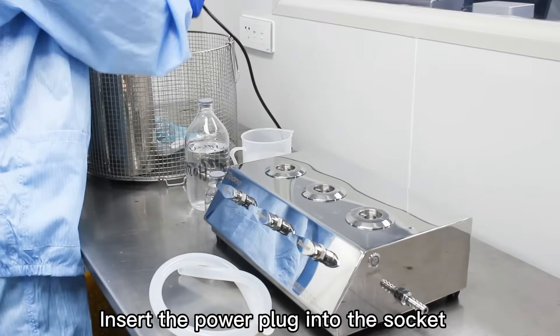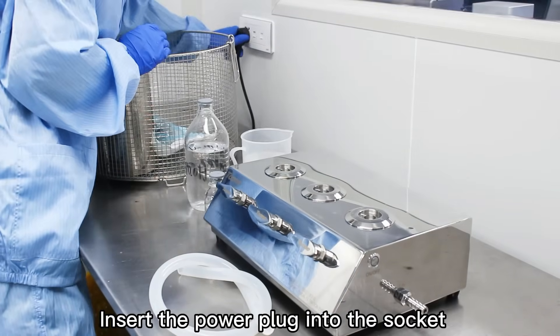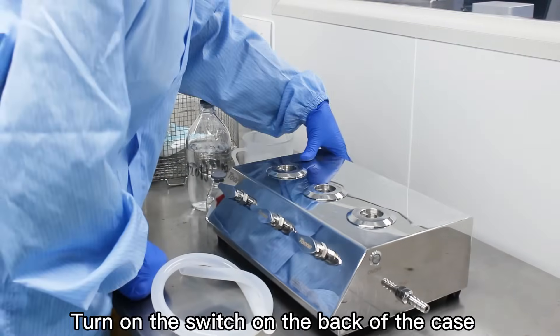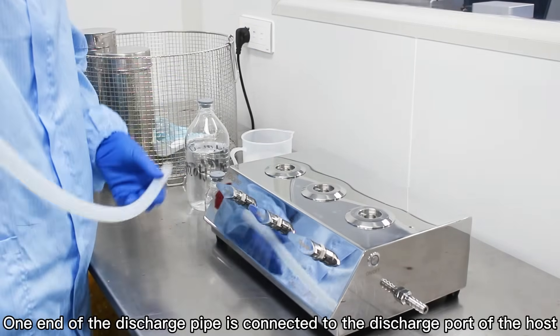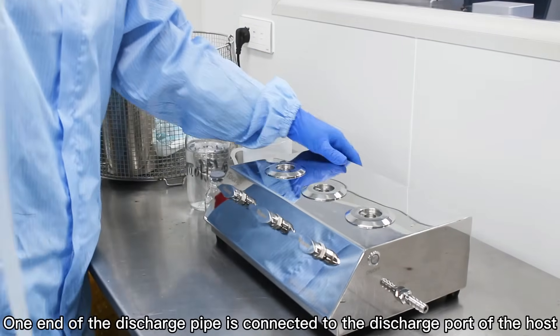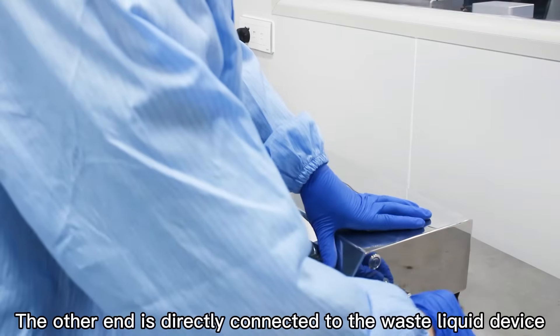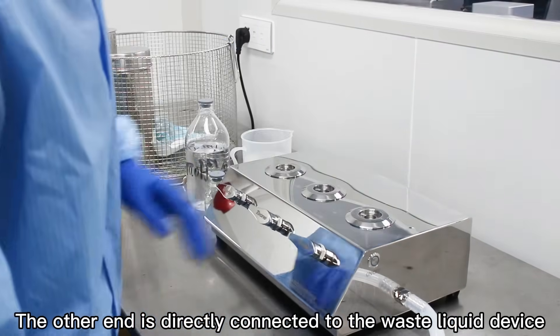Insert the power plug into the circuit. Turn on the switch on the back of the case. One end of the discharge pipe is connected to the discharge port of the host, the other end is directly connected to the waste liquid device.